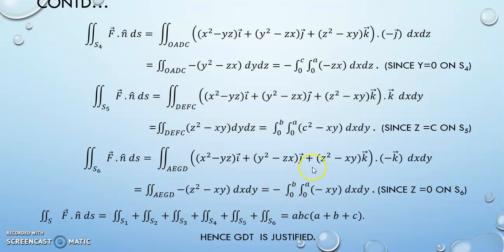So out of 6 terms, you will be getting 3 terms as negative terms and the other 3 terms as positive terms depending upon the vector signs. So actually I got all the 6 values added up together. I am getting the value as abc(a + b + c).